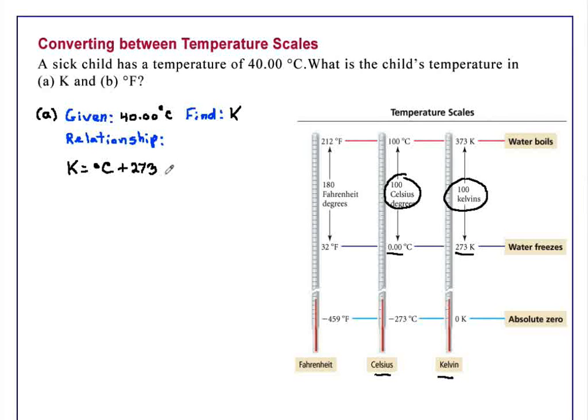If we need more significant figures, which we do in this case, the other two are 0.15. So now we are ready to solve. This is just a matter of plugging in. Kelvin equals 40.00 degrees C plus 273.15, and this equals 313.15.